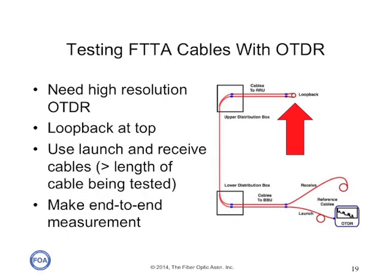You can use the same loopback idea for testing with an OTDR. You need a high-resolution OTDR, and the loopback needs to have enough fiber in it so that both ends can be clearly distinguished by the OTDR to allow reasonable measurements on the cable. More details on how to test these cables is on the FOA page about fiber to the antennas on the FOA online guide — we recommend you go to that page to get all of the details on testing.